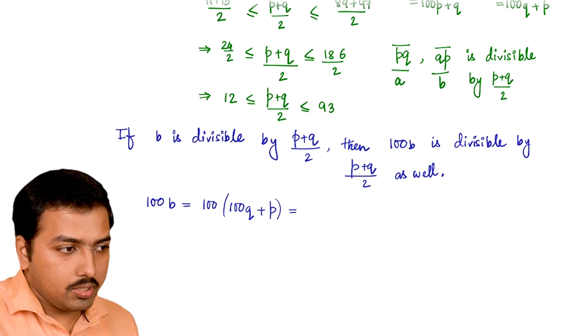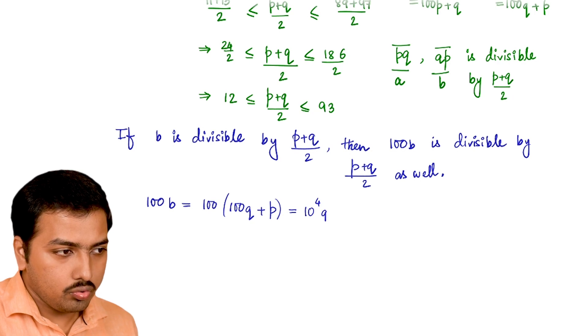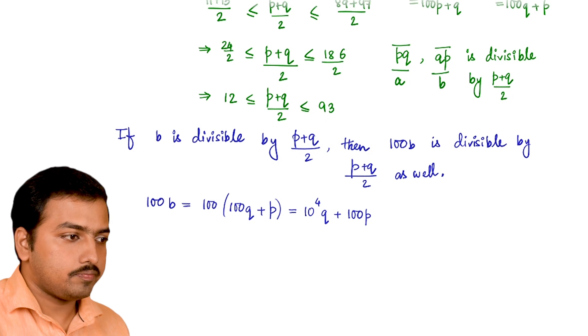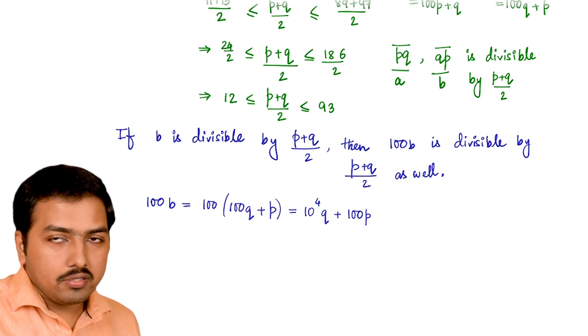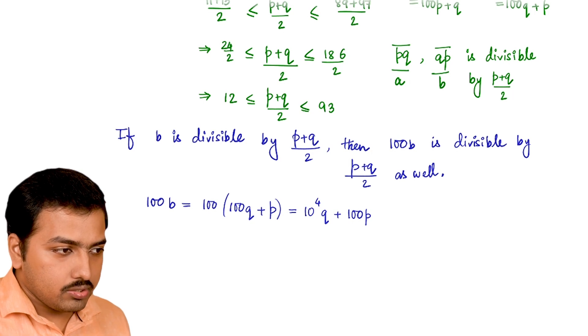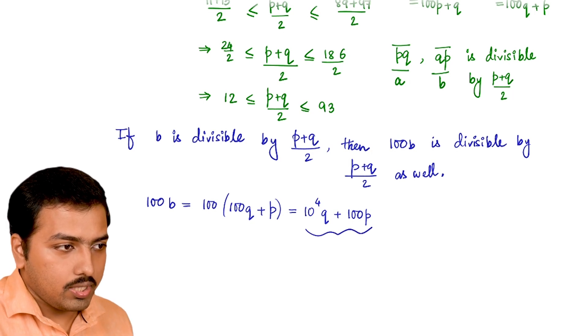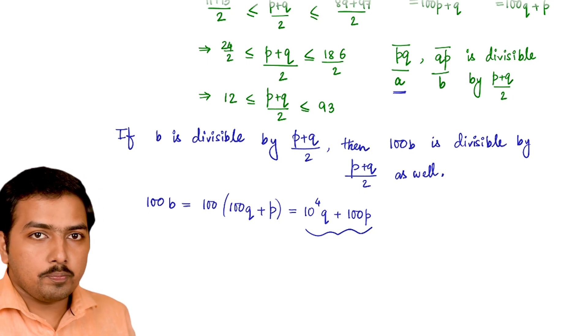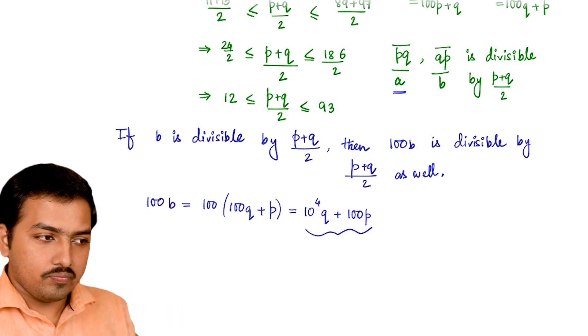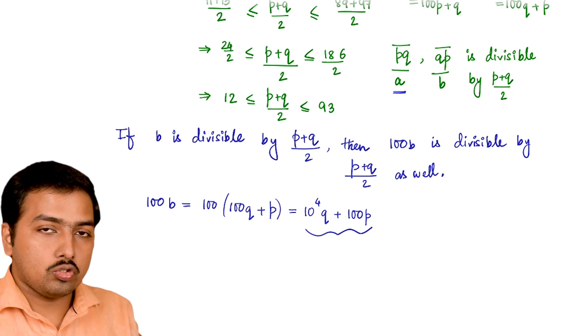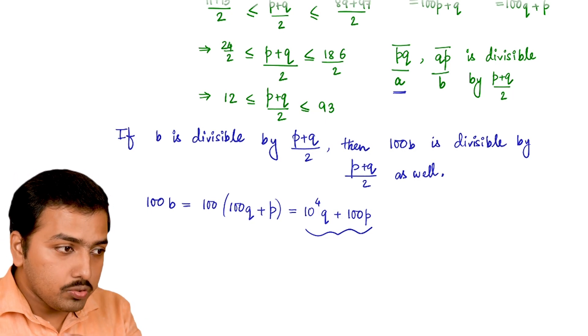100b equals 100(100q + p) = 10⁴q + 100p. On the other hand, I'm getting two numbers: one is this, another one was a. If both the numbers are divisible by (p+q)/2, that directly implies their difference is going to be divisible by (p+q)/2 as well. Let's use it.